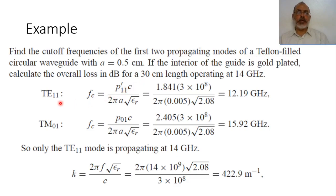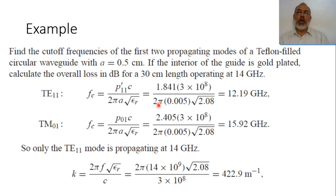The cutoff frequency for the TE11 mode is B'_11 times c over 2π A times square root of epsilon_r. Epsilon_r of Teflon is 2.08. B'_11 is the first root of J'_1, which is 1.841 from the table. c is the speed of light, 3×10^8 m/s, and A is 0.5 cm, i.e., 0.005 m. So the cutoff frequency of the TE11 mode is 12.19 GHz.